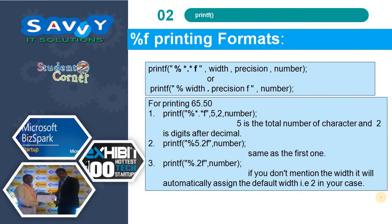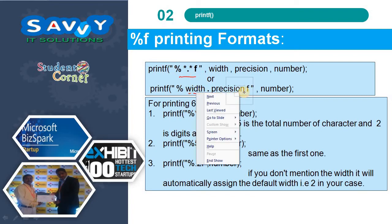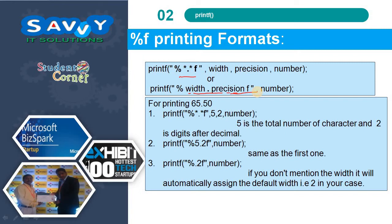For the %f printing format, we can use printf with %*.*f providing a precision number, or we can use %.<precision>f directly. For printing 65.50, using *.*f with arguments 5 comma 2 means 5 is the total number of characters and 2 is the digits after the decimal. Using .2 without specifying width will automatically assign a default width with 2 decimal places.